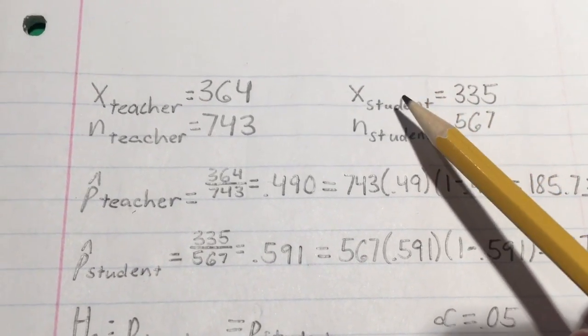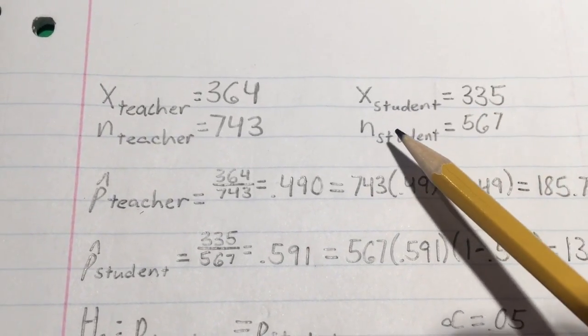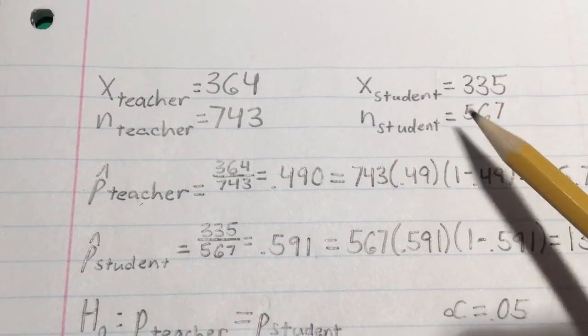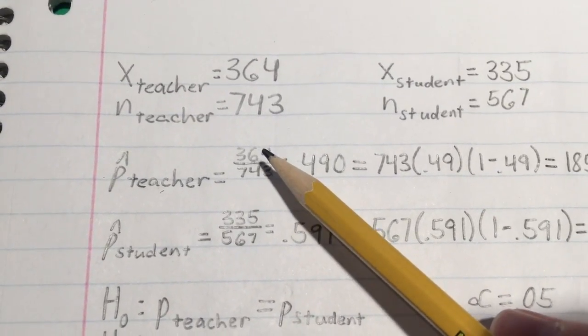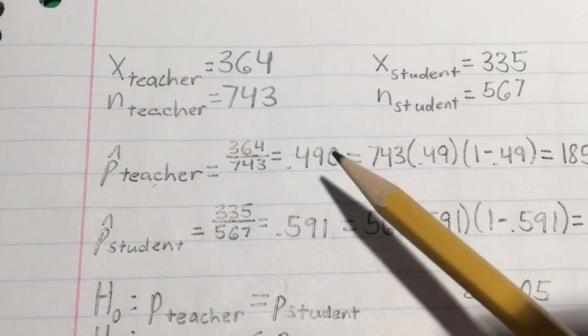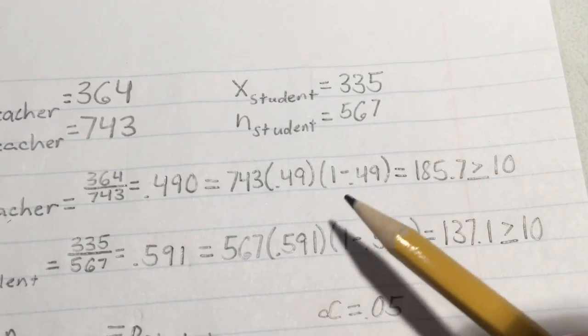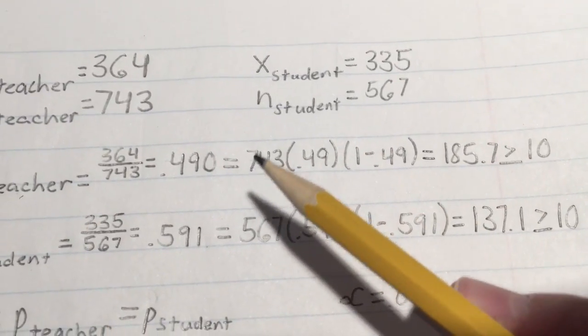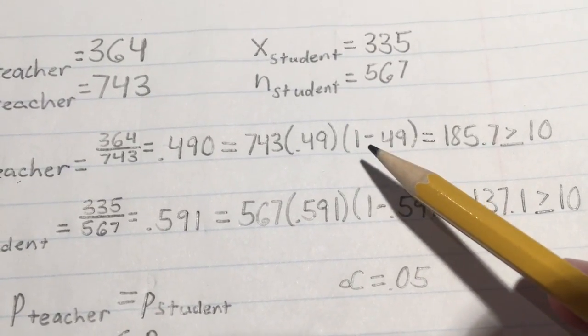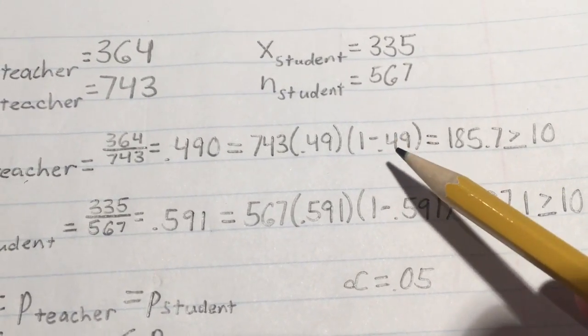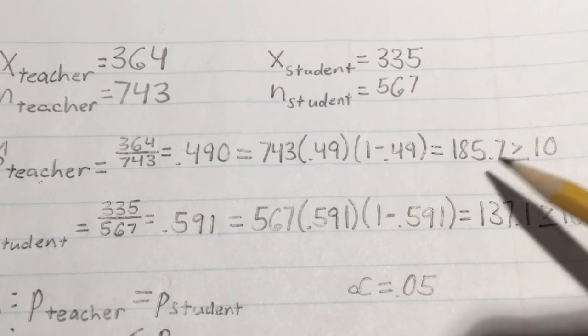We have the student-centered model sample being 335 out of a population of 567. Now to find our sample proportion, we simply divide 364 by 743 to get 0.490. Then to verify our model, we multiply the population by the sample proportion multiplied by 1 minus 0.49, which gets us 185.7, which is greater than or equal to 10.